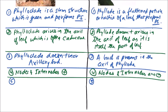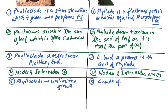The next difference is that a phylloclade shows unlimited growth. Because it has nodes and internodes, the growth is unlimited. But the growth of a phyllode is limited.